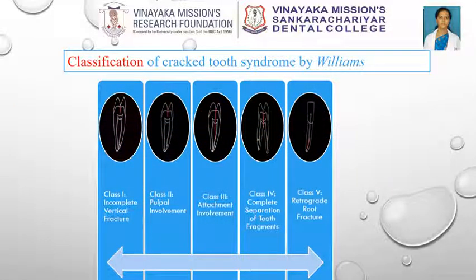Classification of Crack Tooth Syndrome by Williams: Class 1 — Incomplete Vertical Fracture through enamel into dentin but not into pulp. Class 2 — Pulpal Involvement: incomplete crown fracture involving the pulp. Class 3 — Attachment Involvement: incomplete vertical fracture involving the attachment apparatus. Class 4 — Complete Separation of Tooth Fragments, where the fracture divides the tooth. Class 5 — Retrograde Root Fracture, i.e., apically induced fracture.